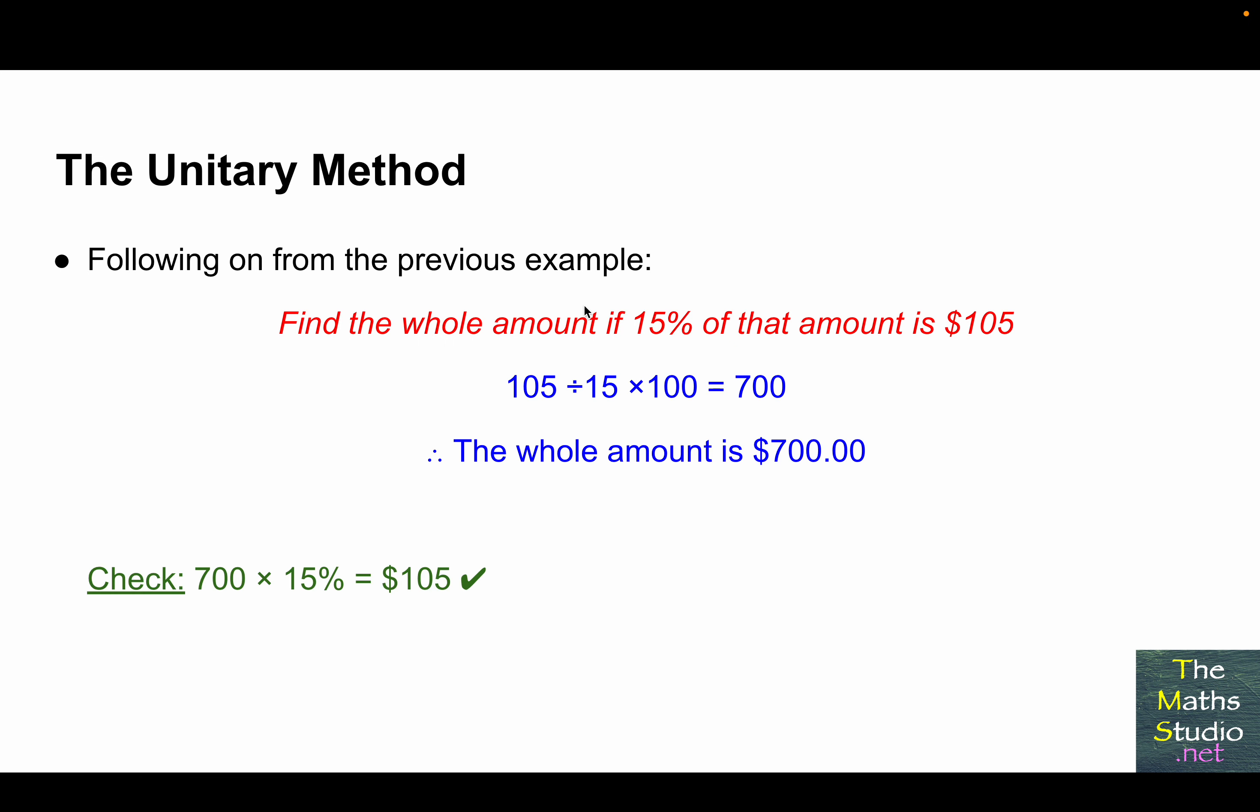Following on from the previous example, find the whole amount if 15% of that amount is $105. The way we work that out, we start off with 105, divide that by 15, and that gives us the value of 1% of that amount, and then multiply that by 100 to give us the entire amount. And in this case, 105 divided by 15 times 100 is equal to 700. Therefore, the whole amount is $700.